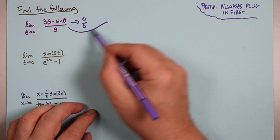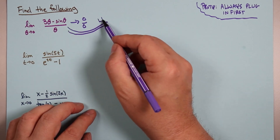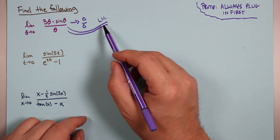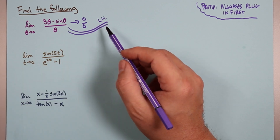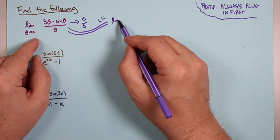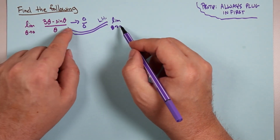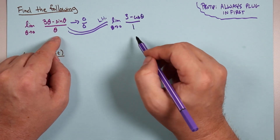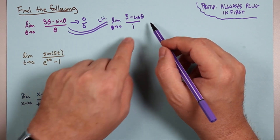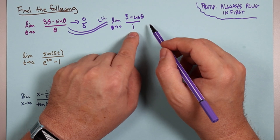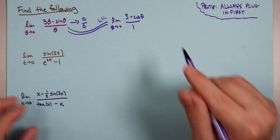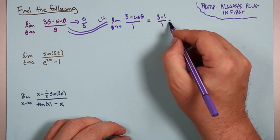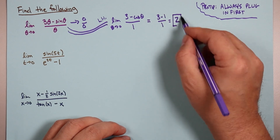So we can say this is equal to — by L'Hôpital — the limit as theta goes to zero. I use LH to remind ourselves we're doing L'Hôpital. Take the derivative of the top: 3 minus cosine theta. Take the derivative of the bottom: 1. Now plug in. We're not getting zero downstairs or infinity, so it's not indeterminate — game over. We get 3 minus 1 over 1, so our answer is 2.